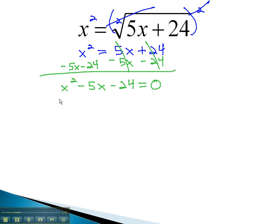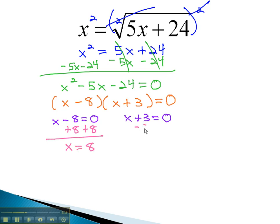We then want to factor this equation. To review factoring, you can watch some of the previous videos on factoring. This equation factors to x minus 8 times x plus 3. Once it's factored, we can solve for x by setting each factor equal to 0: x minus 8 equals 0, and x plus 3 equals 0. Solve the equations by adding 8, and we get x equals 8, and subtracting 3, x equals negative 3.